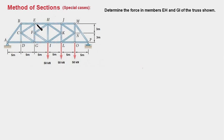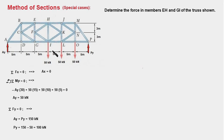We have to find the force in members EH and GI using the method of sections. The first step is to draw a free body diagram of the entire truss. We will replace the pin support with two forces in the horizontal and vertical direction, and a single force in the vertical direction will replace the roller support. There are no applied forces in the horizontal direction, so the x-component of the reaction force at A is zero. Ax = 0.